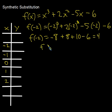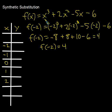Hopefully you agree: f of negative 2 equals 4. If you didn't get that, it's not surprising — it's very easy to make mistakes when evaluating polynomial functions for a given value of x, especially for negative numbers. So we're going to look at a new alternative approach.